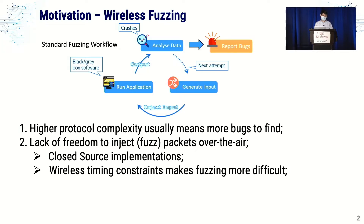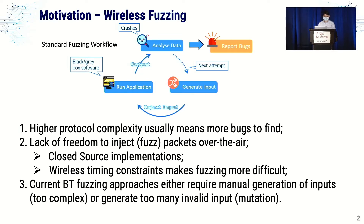One of the biggest issues of why it's so difficult to control input is because there's a lot of closed-source implementation, particularly for Bluetooth Classic. Another difficult thing in a wireless fuzzing context is that wireless timing is important — if the fuzzer is not fast enough, you may get issues communicating with devices over the air. At the time of writing, current fuzzers for Bluetooth Classic are either generational, with a state machine implemented by hand that's difficult to keep updated, or mutation-based, which generate inputs randomly and discard a lot of them.